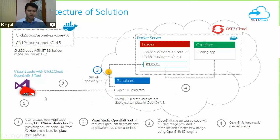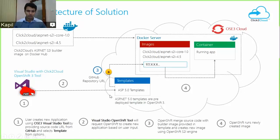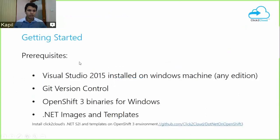Here we can see the core architecture of our solution. The Visual Studio user creates a new application using the OpenShift 3 Visual Studio tool by providing a source code URL from GitHub and selecting templates from the options. The Visual Studio OpenShift tool requests OpenShift to create a new application based on user input. OpenShift merges the source code with the builder image provided in the template and creates a new image using the OpenShift source-to-image engine, creating the ASP.NET Core 1.0 application on OpenShift.